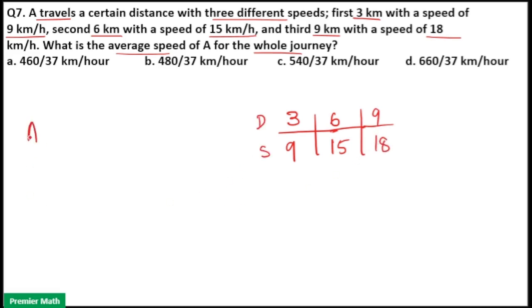We need to find out the average speed of this entire journey. Average speed is equal to total distance by total time. Here, time is not given. Time is equal to distance by speed.